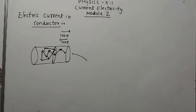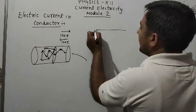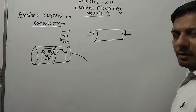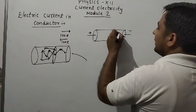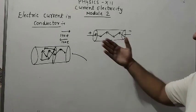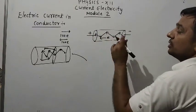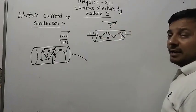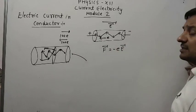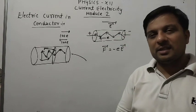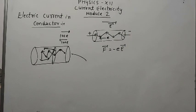Now if we apply an external electric field — you can say a battery — electrons will also continue their random motion but will be accelerated towards the positive terminal. The direction of the force on the electron is F equal to minus eE, meaning the force is in the opposite direction of the electric field because the electron has a negative charge and is attracted by the positive terminal.